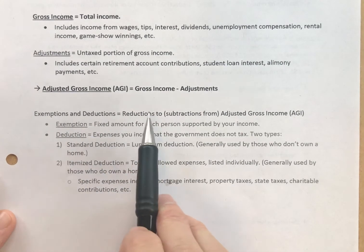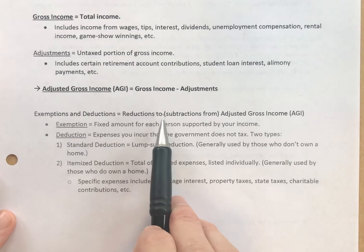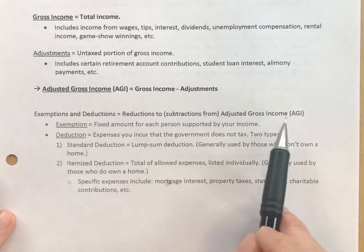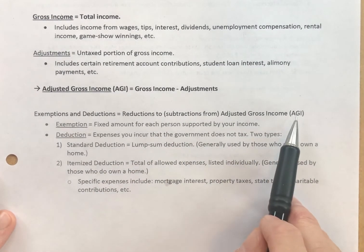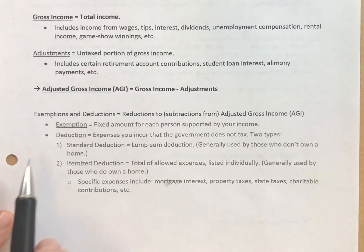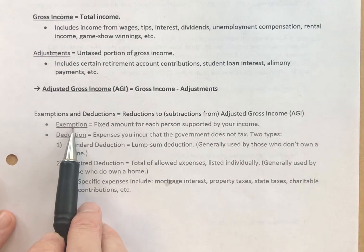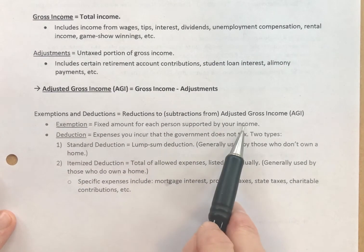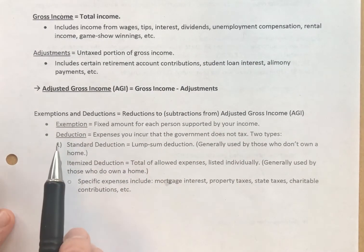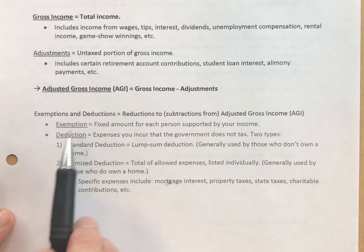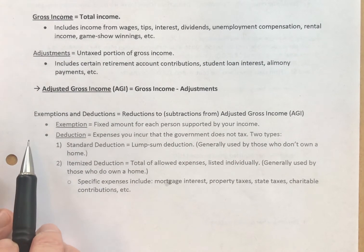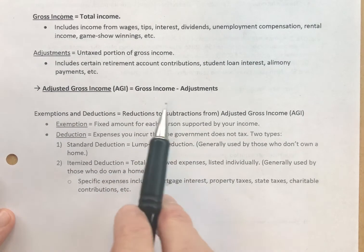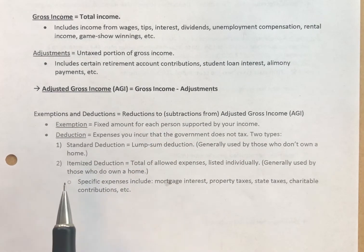Exemptions and deductions are reductions from your adjusted gross income, also known as your AGI. An exemption is a fixed amount for every person supported by your income. If you're single, you get one exemption. If you're single with one child you're supporting, you get two exemptions, etc.